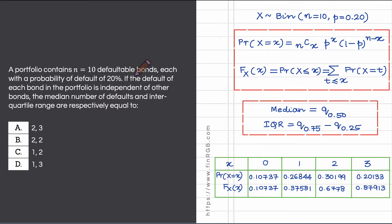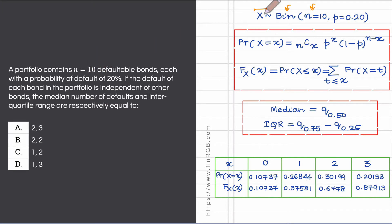In this question we are making two assumptions. First, all 10 bonds have the same probability of default, which is 20%. Second, defaults are independent of each other across bonds. These two assumptions combined lead us to conclude that the number of defaults, captured by random variable X, follows the binomial distribution with number of trials n = 10 and probability of success p = 0.2.